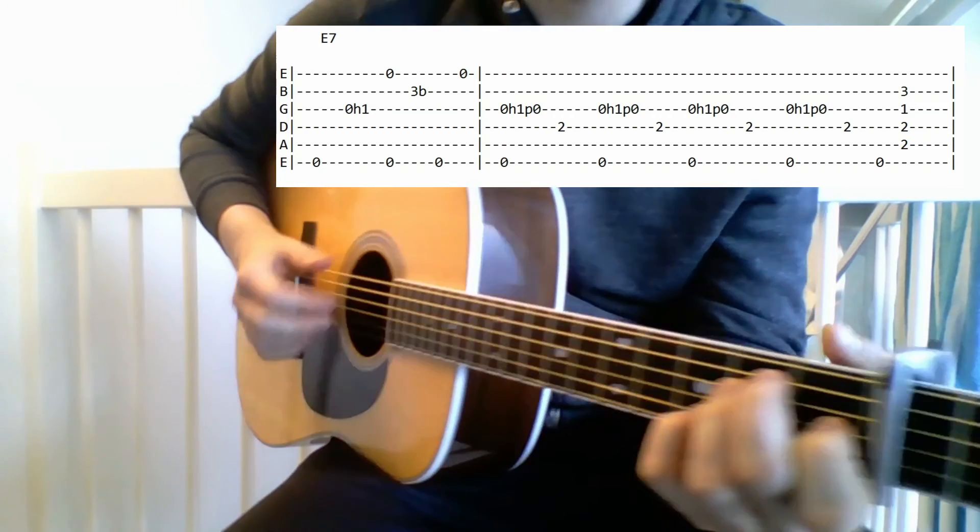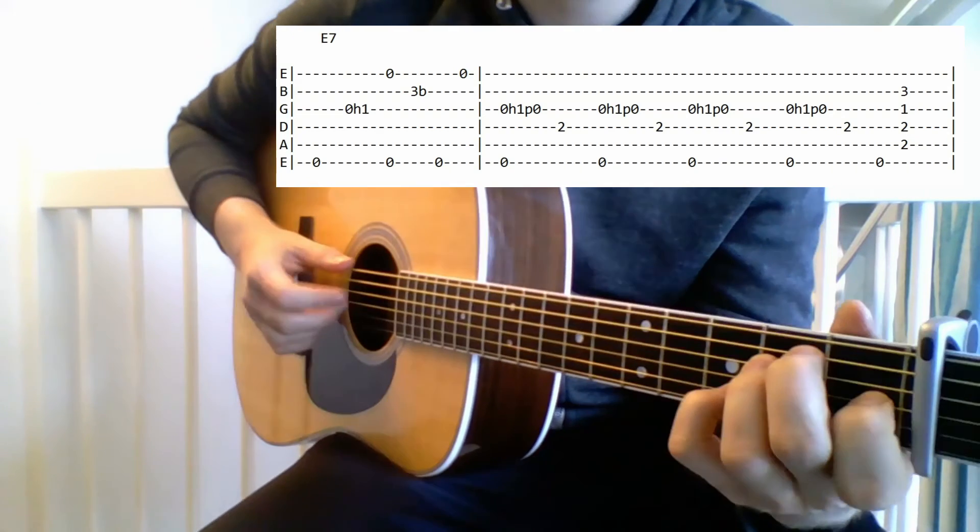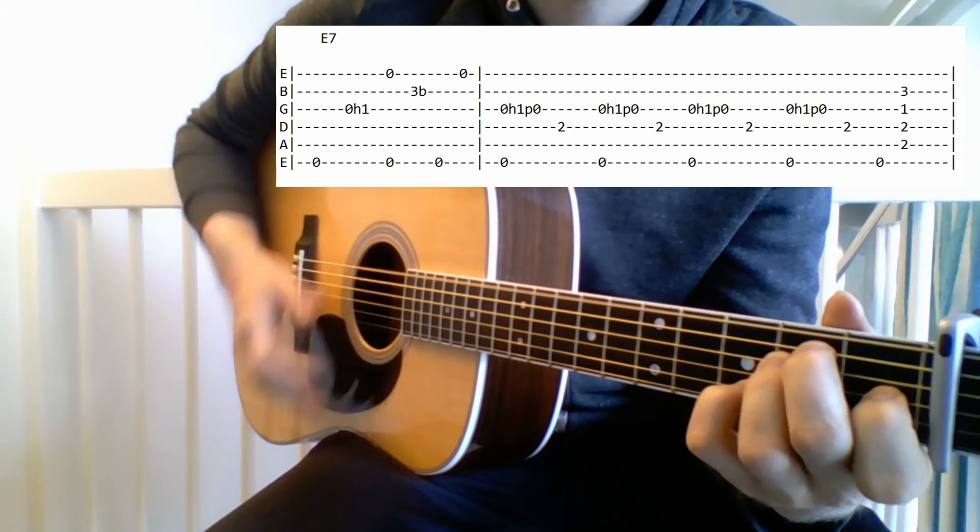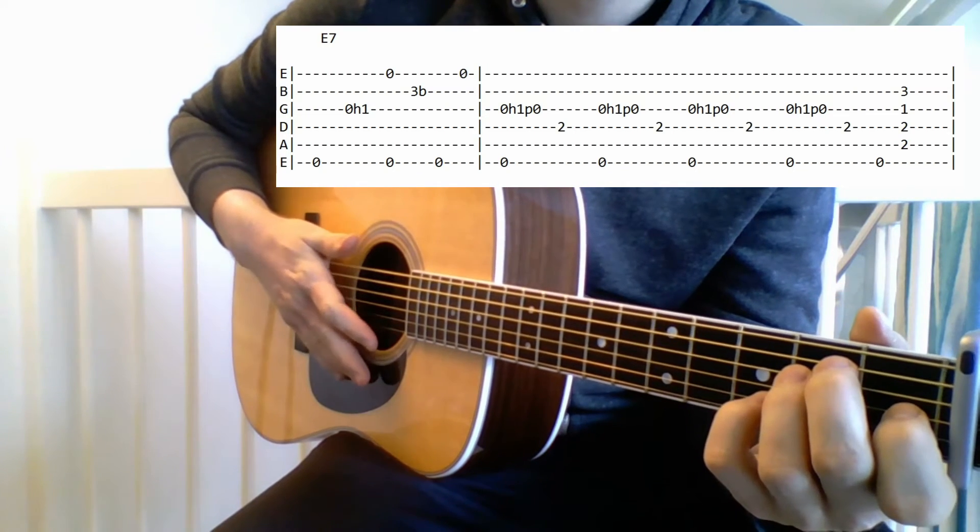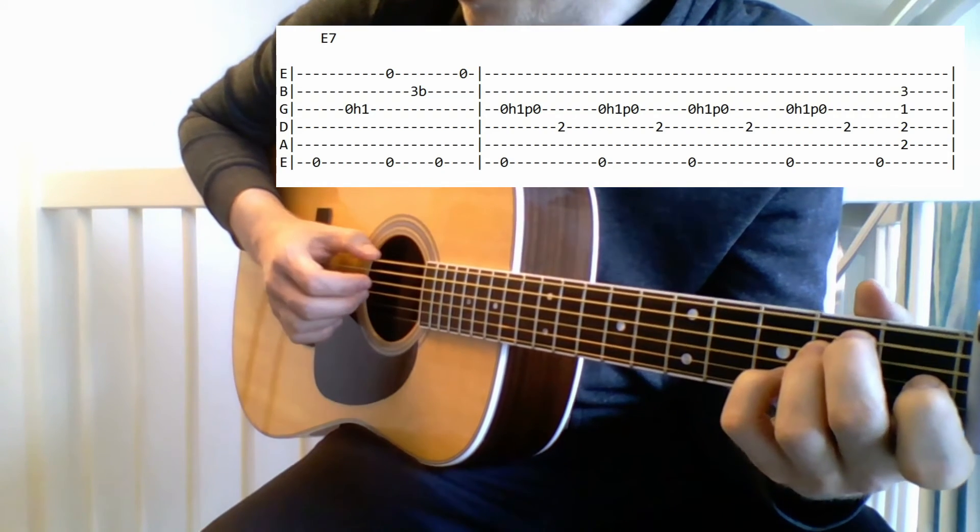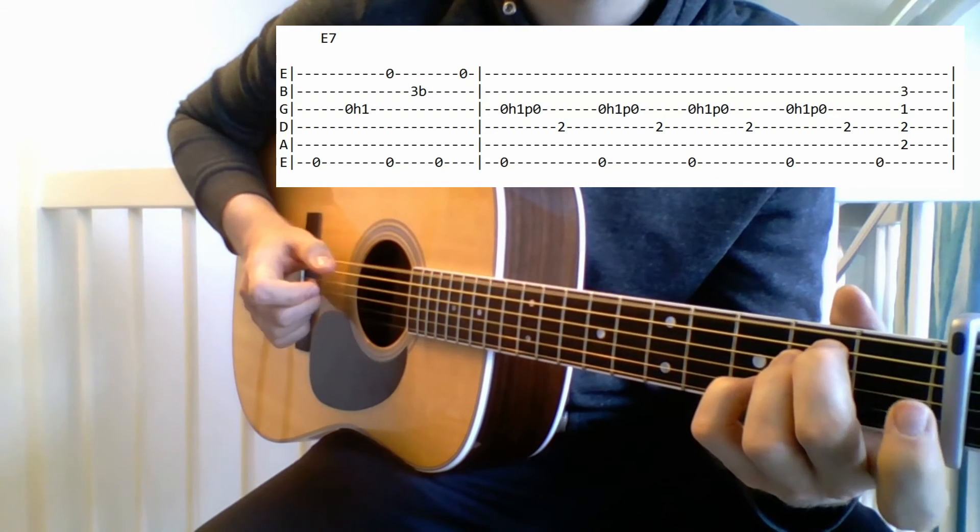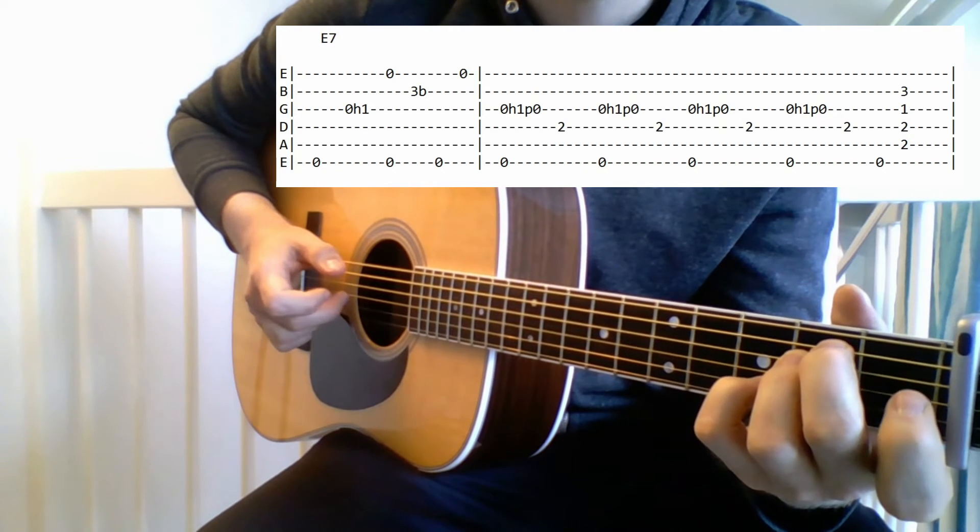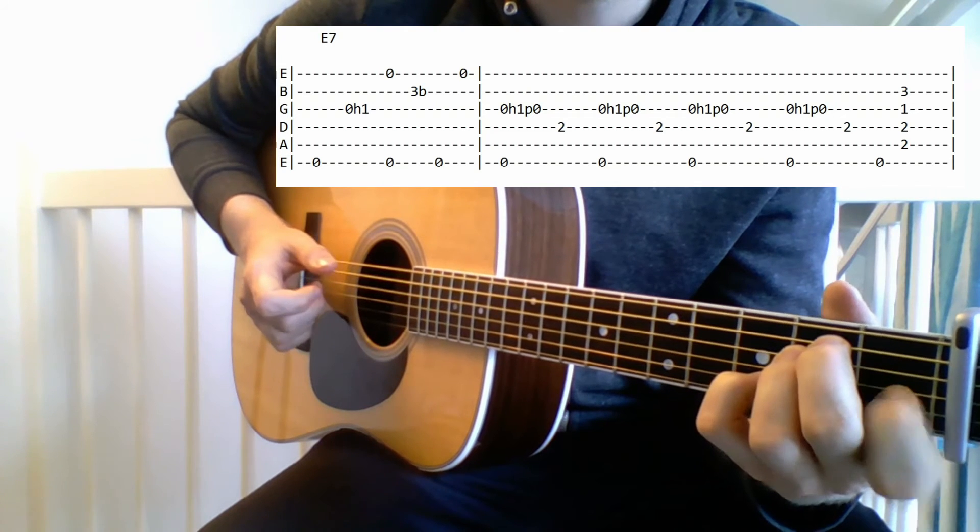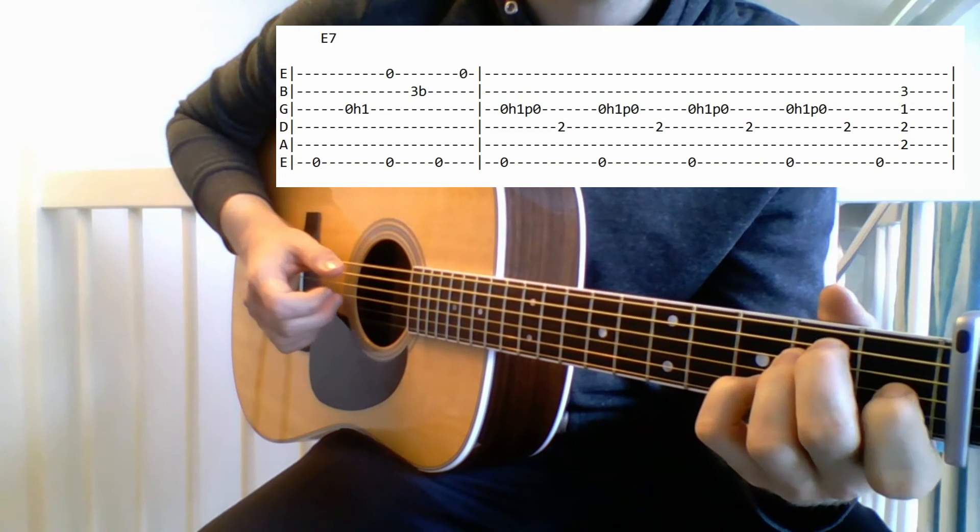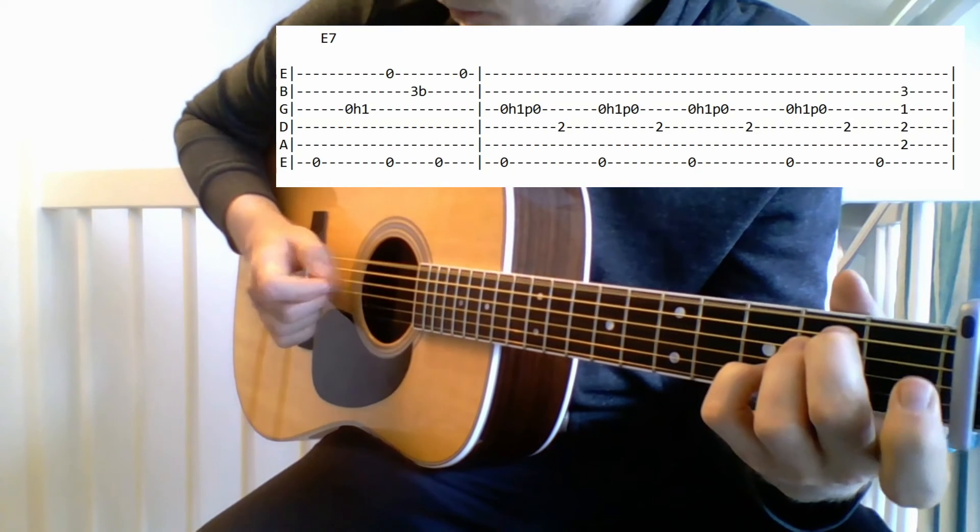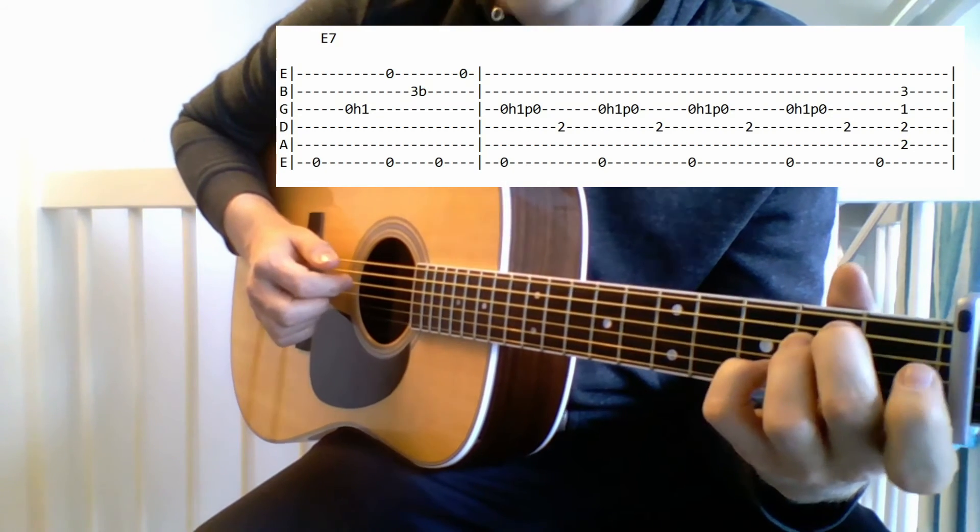Then we move into a little repeated bluesy pattern here. And what I'm doing here is basically just playing this open E string and the open G string, and then hammering on and off with my index finger on the first fret of the G string, and then playing this D string.